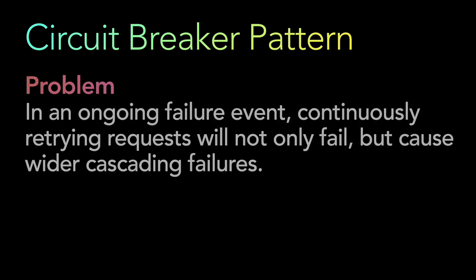So what is the circuit breaker pattern? To understand that, let's look at the problem. In an ongoing failure event, continuously retrying requests will not only fail but cause wider cascading failures. In a distributed environment, calls to a remote resource or service can fail due to multiple reasons — there can be transient failures, slow network connections, timeouts, or resources being over-consumed or temporarily unavailable. These faults typically correct themselves after a short period of time.